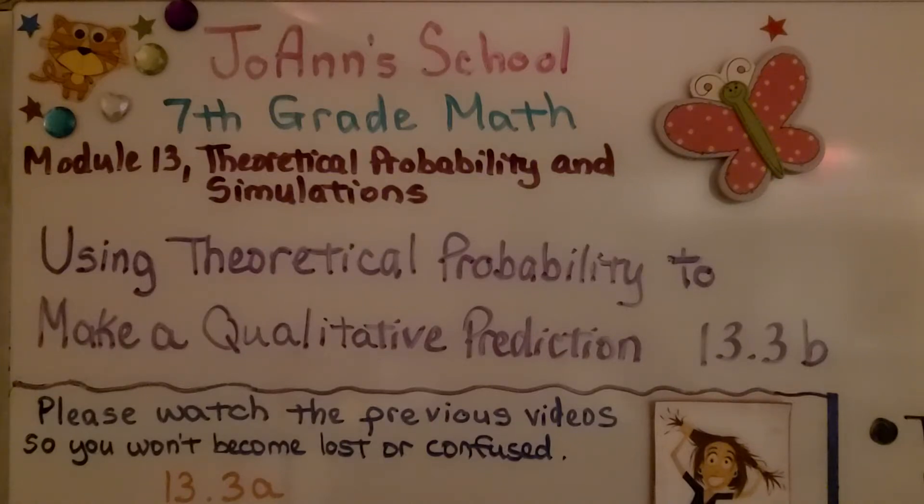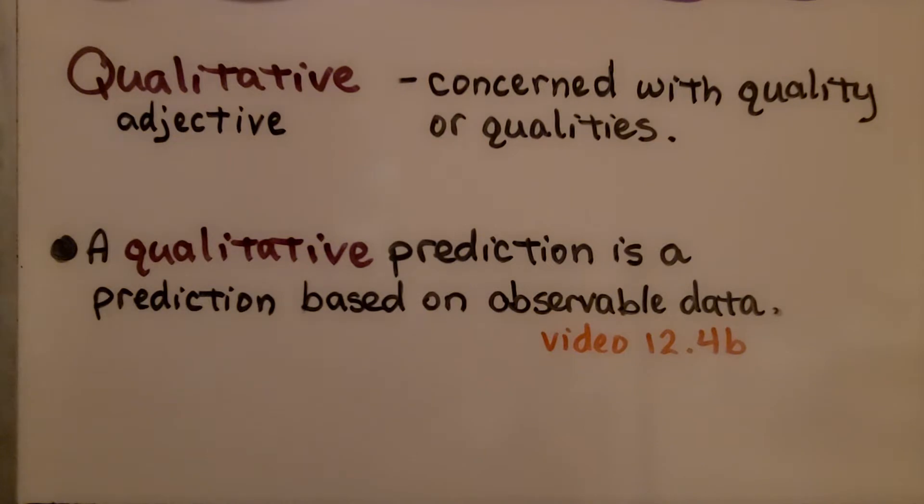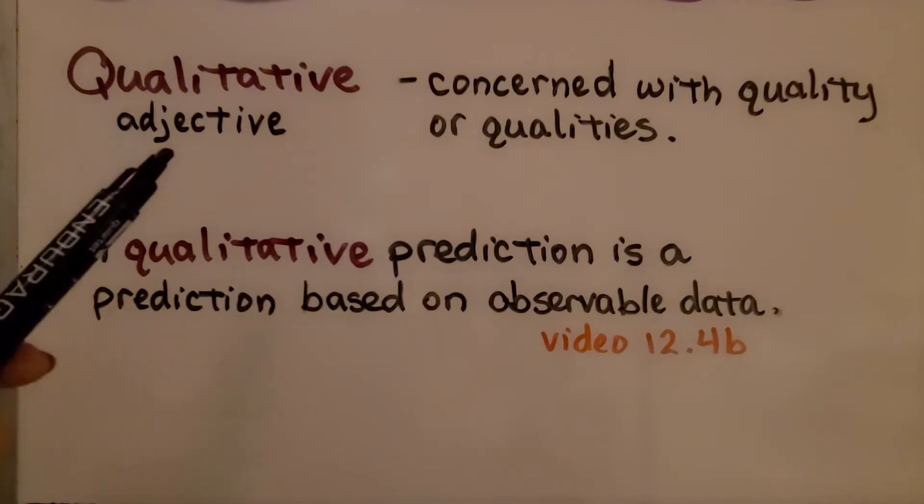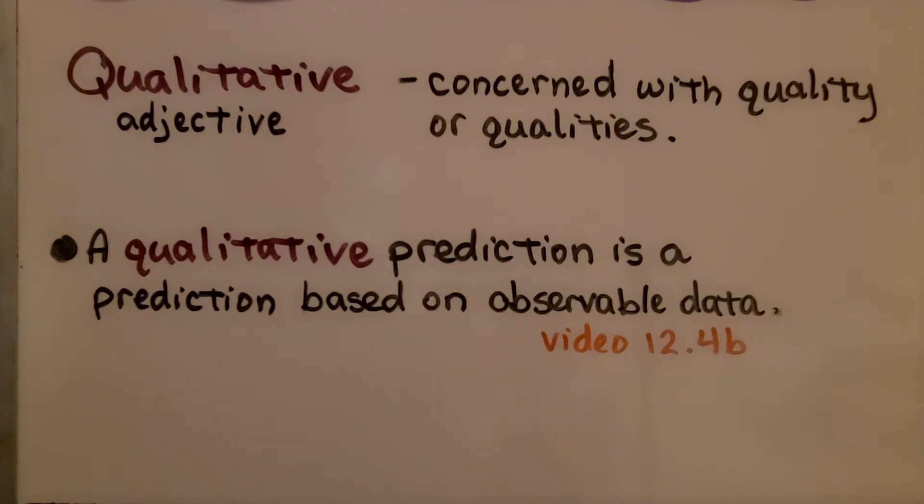Lesson 13.3b: Using Theoretical Probability to Make a Qualitative Prediction. Qualitative is an adjective, just like quantitative, and the definition of qualitative is concerned with quality or qualities. A qualitative prediction is a prediction based on observable data.